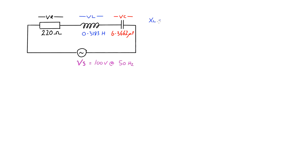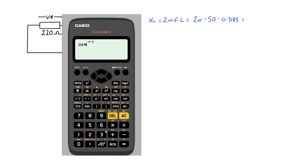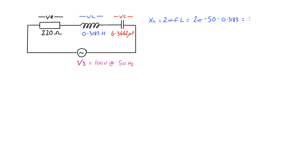The first thing we'll do is find the inductive reactance, which is ωL or 2πfL. That's 2π times 50 hertz times 0.3183 henries, and that gives us 100 ohms.